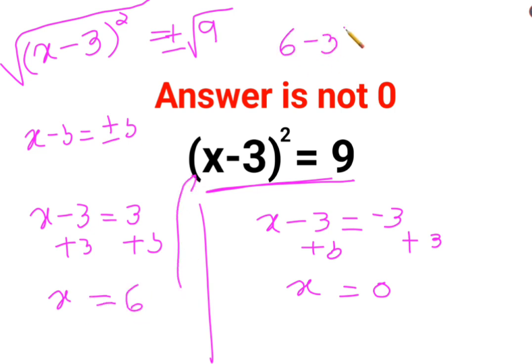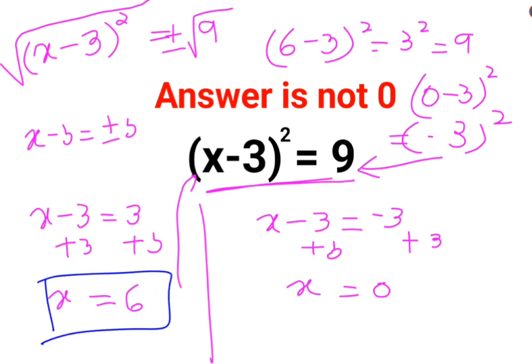So (6-3)² = 3² = 9, and (0-3)² = (-3)² and the square of a negative number is also equal to 9. So I can say the value equals 9 when x = 6 and x = 0, which is absolutely correct for this particular question.